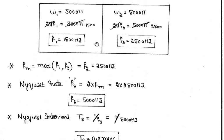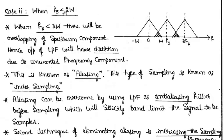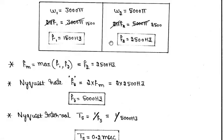One question that may arise is: when we have f₁ and f₂, why must we consider the highest message signal frequency rather than the minimum? As discussed in the previous class, if the sampling frequency is less than two times the highest message signal frequency, it leads to aliasing. If we took f₁ = 1500 Hz for sampling instead of f₂ = 2500 Hz, it would cause aliasing and overlapping of information, making it impossible to recover the original message signal. That is why we must consider the highest frequency — this is the Nyquist criterion.